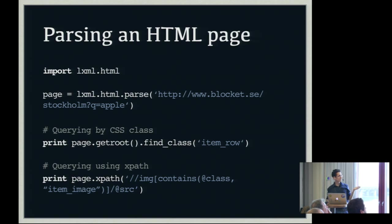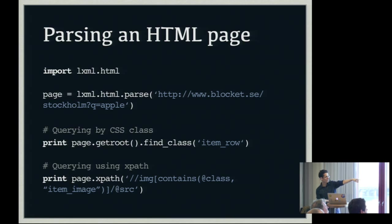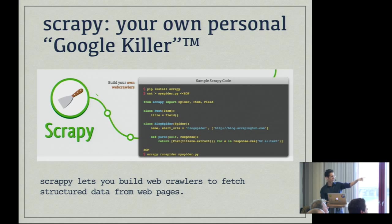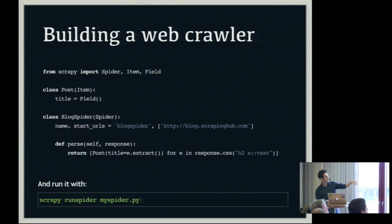If you want to parse an HTML page, you'll need a parser. LXML, which is usually used with XML, also has an HTML module. You can quickly fetch stuff based on CSS classes and do XPath requests for really specific content. But if you want to fetch a lot of data — like all items from some e-commerce website — you have tools like Scrapy that let you build a web crawler. It's really easy: you just define the starting page, what you do on each page, and the type of items you want to save, and it will do everything by itself — go from URL to URL, avoid loops, and that sort of stuff.